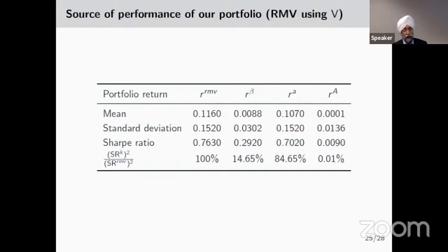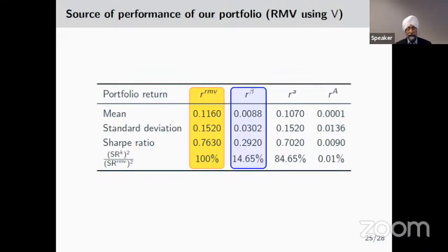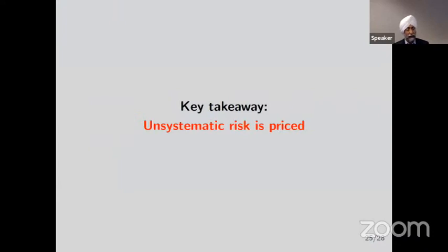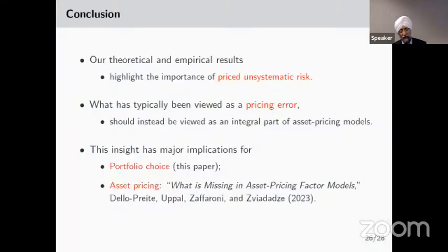Where does the performance come from? Looking at the decomposition: the beta portfolio contributes only 15% of the squared Sharpe ratio, while the asset-specific component contributes 85% of the squared Sharpe ratio. The key takeaway is that unsystematic risk is priced, and what has typically been viewed as a pricing error should not be viewed as such — it is something to be exploited rather than treated as a pricing error.